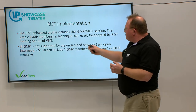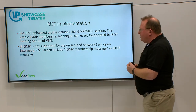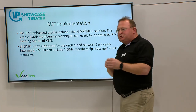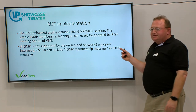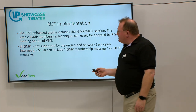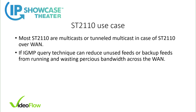If IGMP is not supported by the underlying network, what RIST can do is add an IGMP membership report mimicking message in the RTCP that is already sent between peers. The same can be said for ST2110, which is also multicast-based in some installations. That technique will reduce the pressure on the network, and the IGMP query technique can also reduce unused feeds — backups and so on that are maybe not consumed — saving bandwidth and pressure on the network.